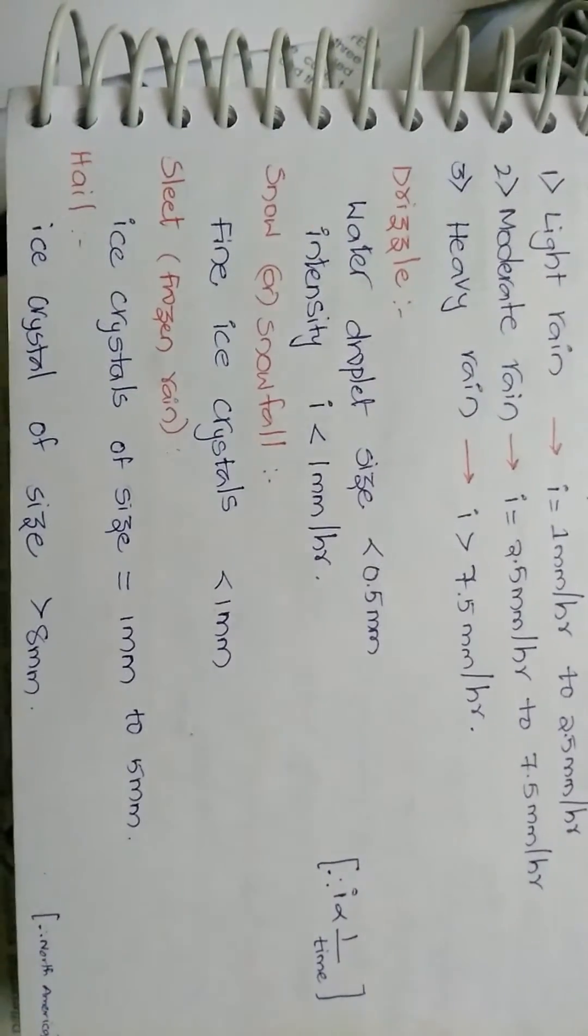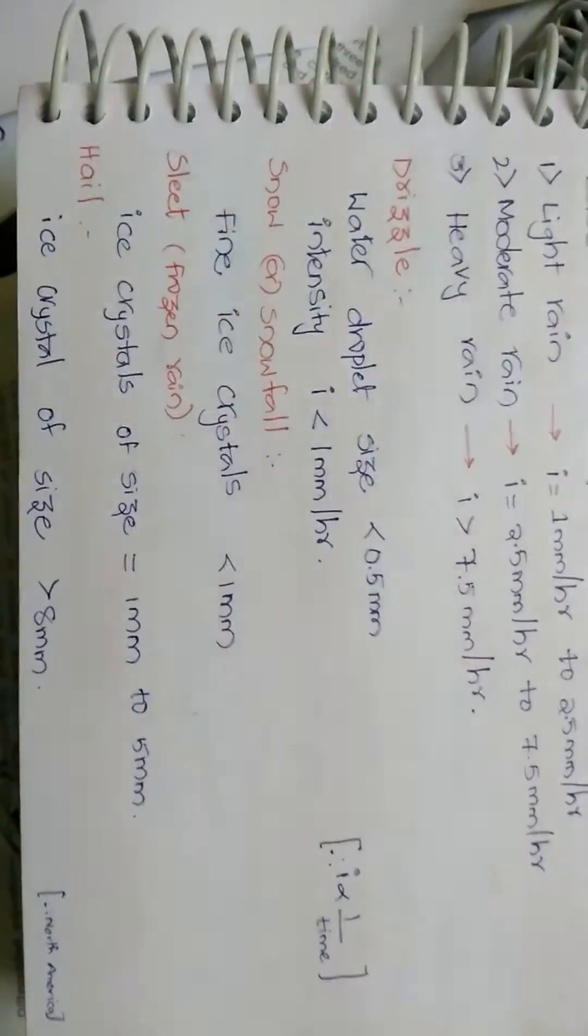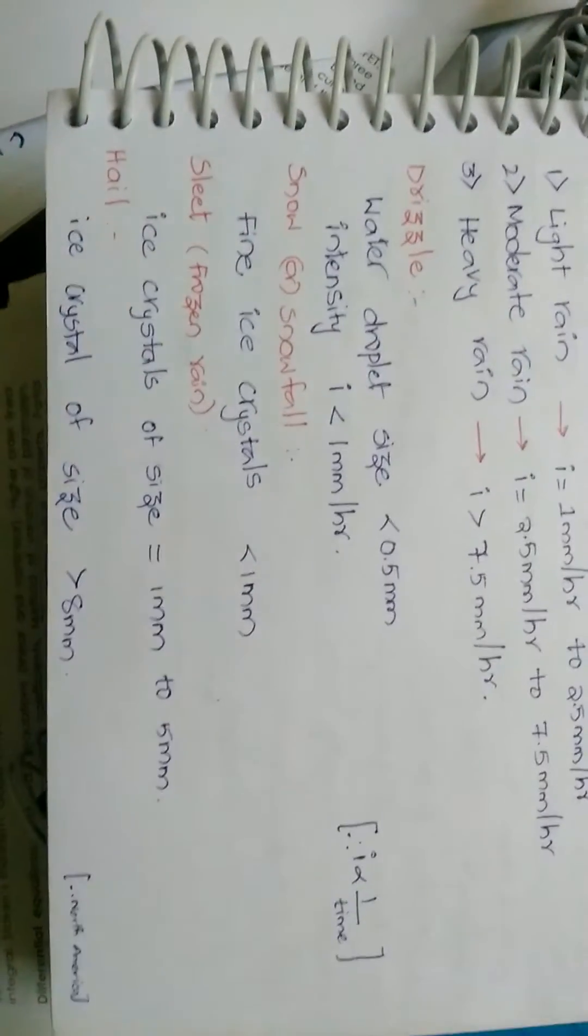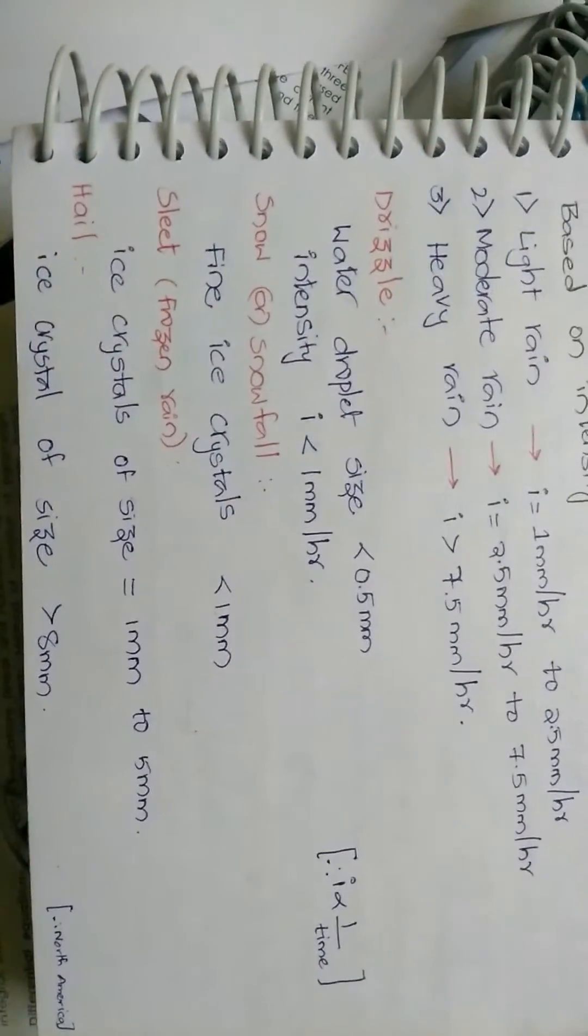Drizzle has water droplet size less than 0.5 mm. Intensity of the drizzle is less than 1 mm per hour. Intensity is inversely proportional to the time.